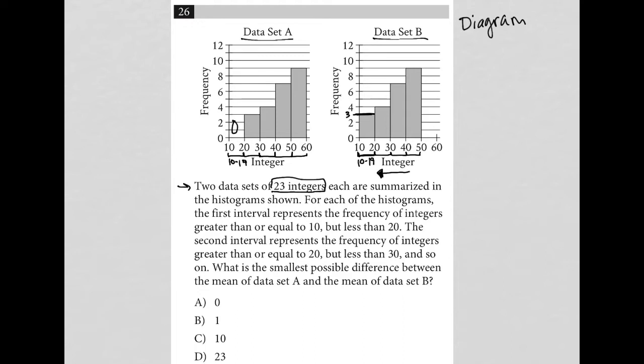So in essence, we already pointed out there are zero data points here for data set A, but we do have three here for data set B between 10 and 19. And on the high end, there are nine data points here between 50 and 59 for data set A, but there are no data points here for data set B between 50 and 59.